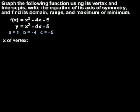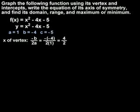To find the x-coordinate of the vertex, we use the formula negative b over 2a, which in this case is negative times negative 4 over 2 times 1, or positive 4 over 2, which is 2. So the x-coordinate of the vertex is 2. Remember this formula, negative b over 2a — we'll be using it throughout this section.